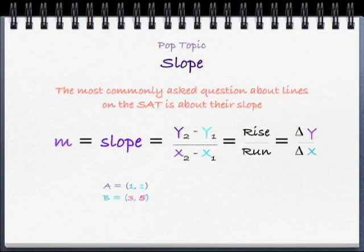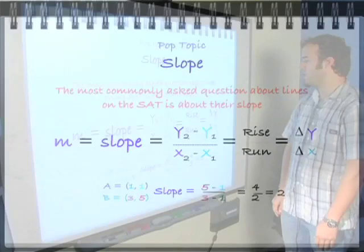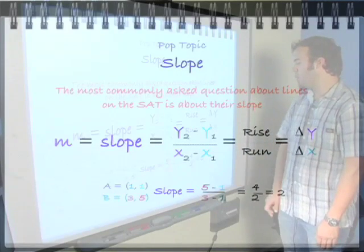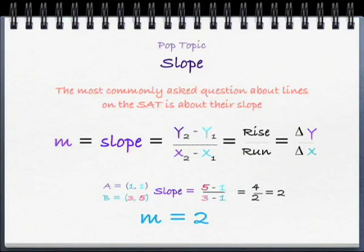Let's try it. We have point A located at 1, 1 and point B located at 3, 5. Let's plug in these points. Let's take our y2 minus y1, which is 5 minus 1, over our x2 minus x1, which is 3 minus 1, which gives us 4 over 2, which reduces to 2. We can now say that m equals 2, which is our slope.